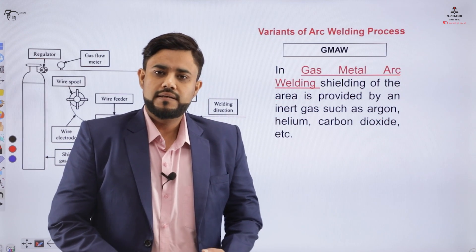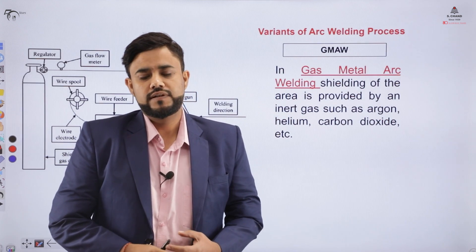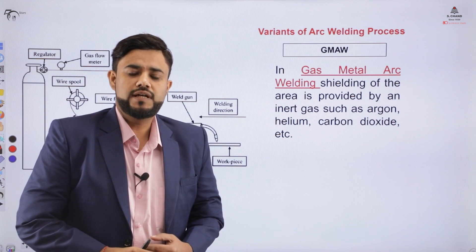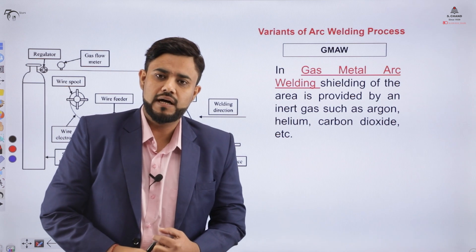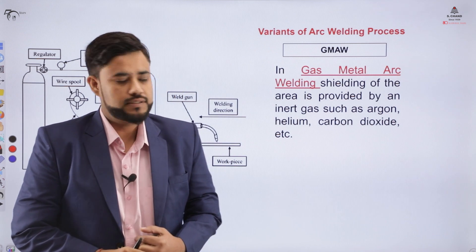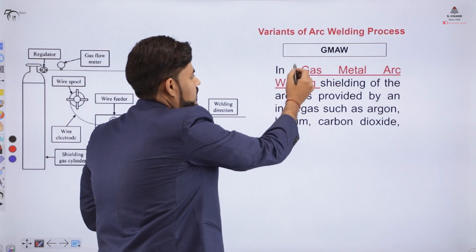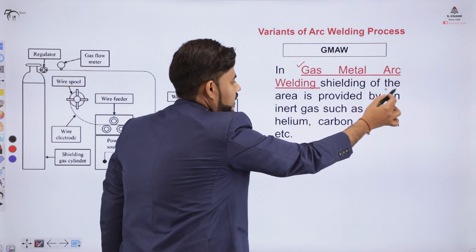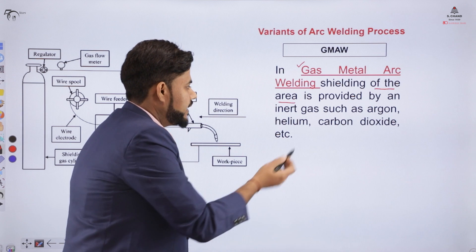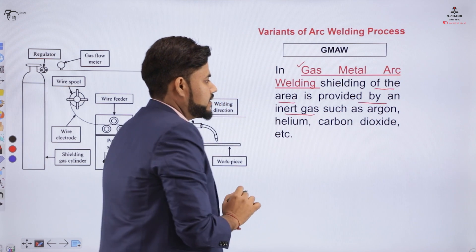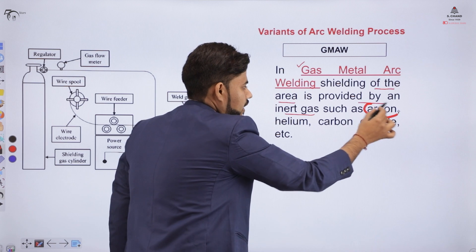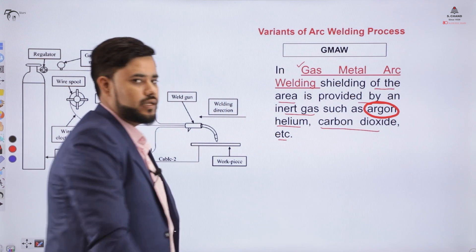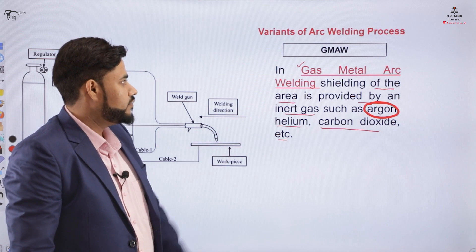The third variant of the arc welding process is GMAW — gas metal arc welding — also known as MIG welding. In the gas metal arc welding process, shielding is provided with the help of inert gases. Those inert gases include argon, helium, carbon dioxide, or any other inert gas suitable for the process.